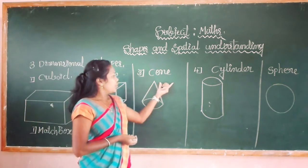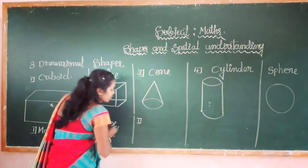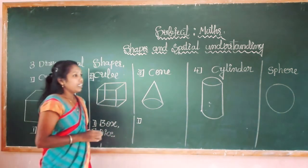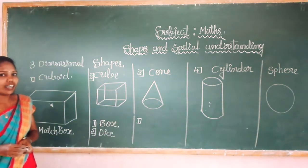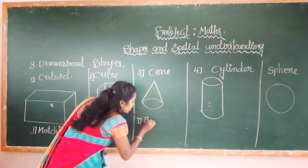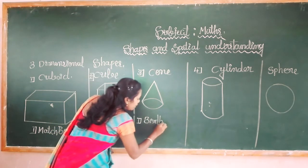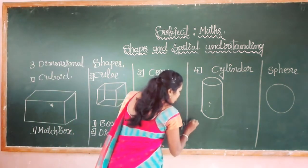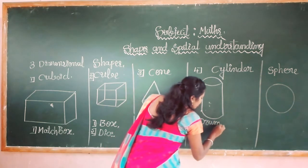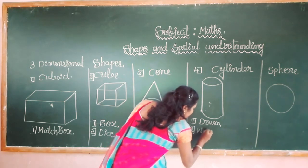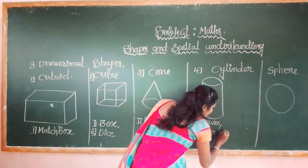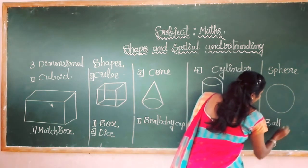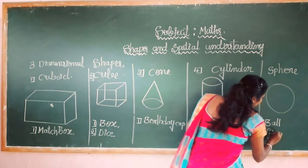Let's give more examples for cone shape. How do you celebrate your birthday? What is special at a birthday? Yes — a birthday cap is similar to the cone shape. Then for cylinder shape — drum and also water bottle.